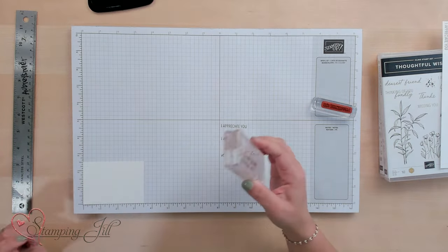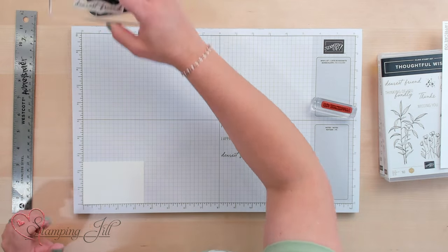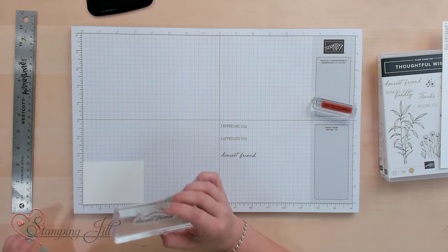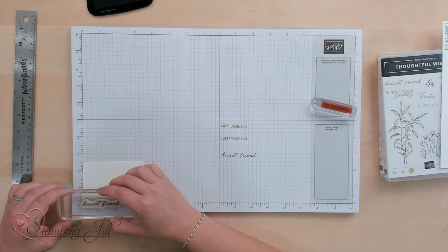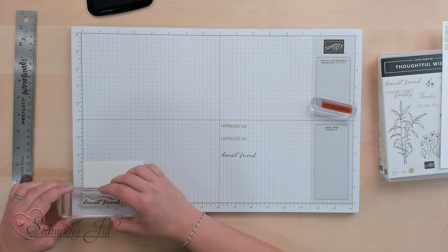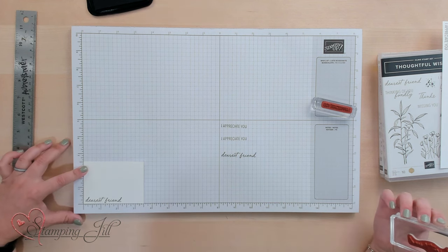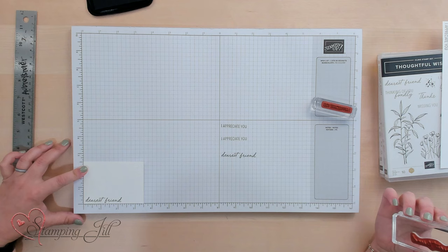Okay, so let's give this one a try. We have my paper down in the corner of my grid paper and I'm just going to line that paper up with the bottom of my stamp and stamp down. And you have Dearest Friend.